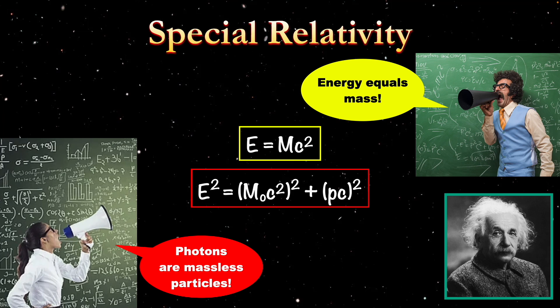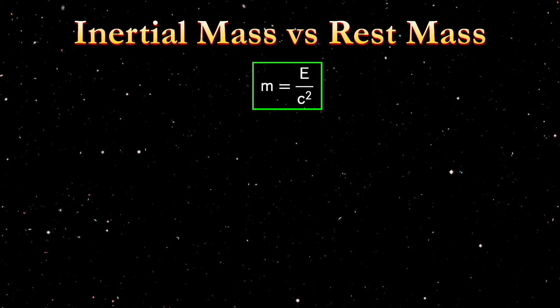On the face of it, these two equations don't seem to agree with one another. What is the difference between this mass, the rest mass, and this mass without the subscript zero? Well, this mass is the inertial mass. So now we have to figure out, what is the difference between the inertial mass and the rest mass?